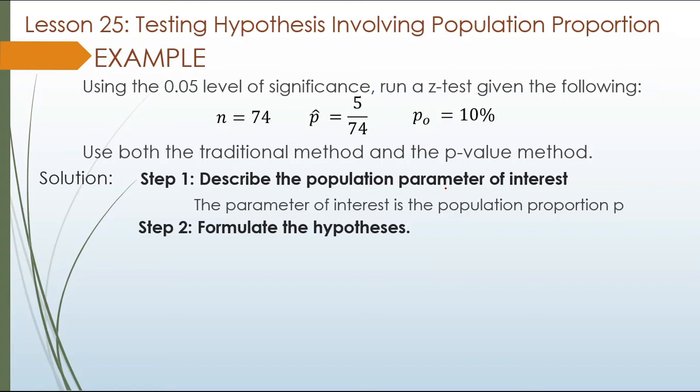Step 2: Let us formulate the hypothesis. The null hypothesis is p equals p-sub-o. So the null hypothesis is H-sub-o: p equals 0.10. Where does 0.10 come from? That is the given p-sub-o, which equals 10%.